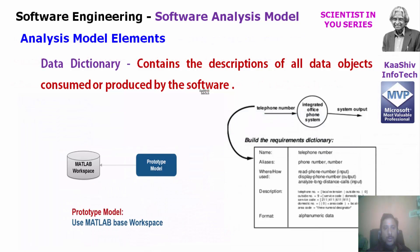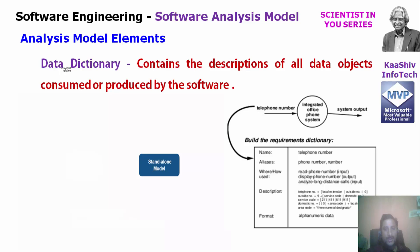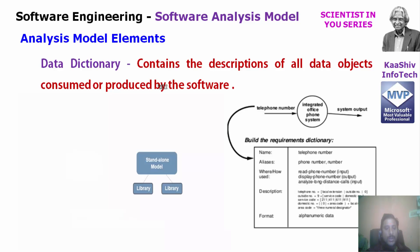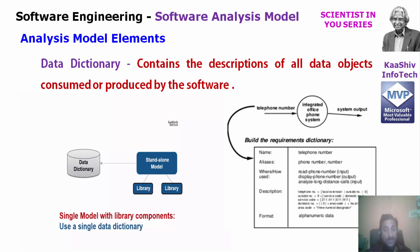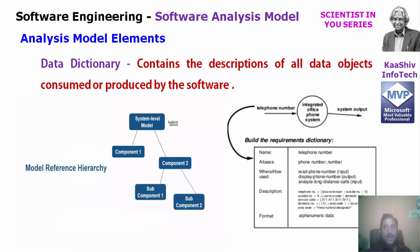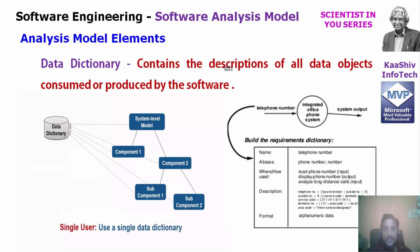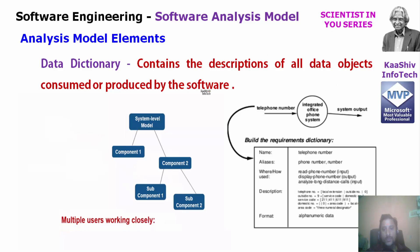The next level is analysis model elements. The first element is the data dictionary. The data dictionary is really simple — for example, one data object is a student, and the student has attributes like student name, phone number, and date of birth. The data dictionary covers the distribution of all data objects used by the software.